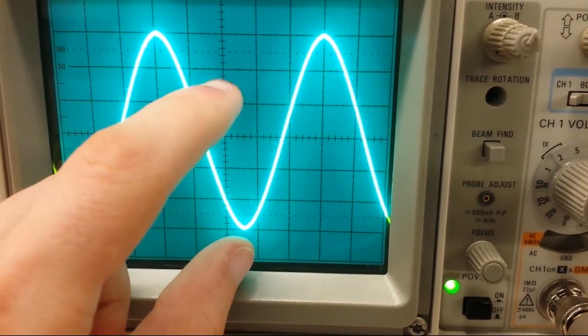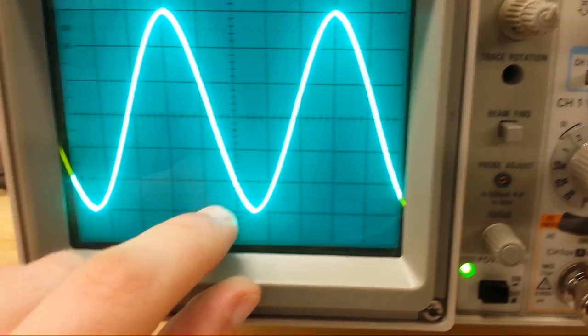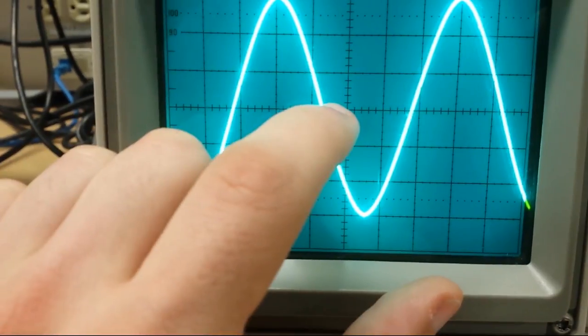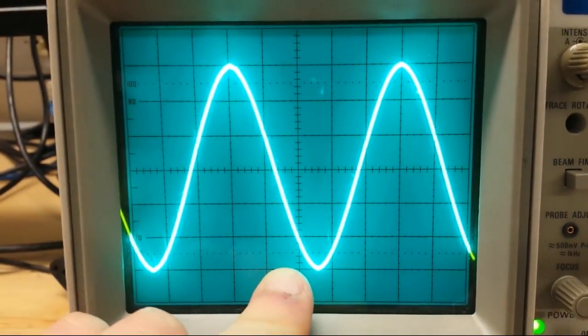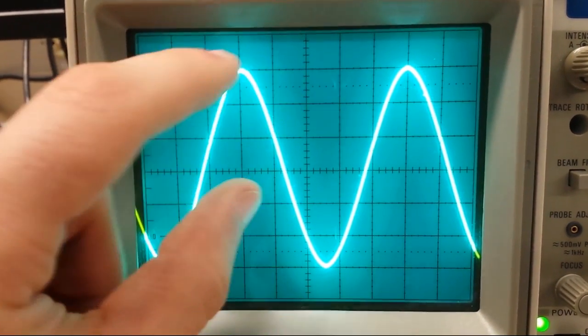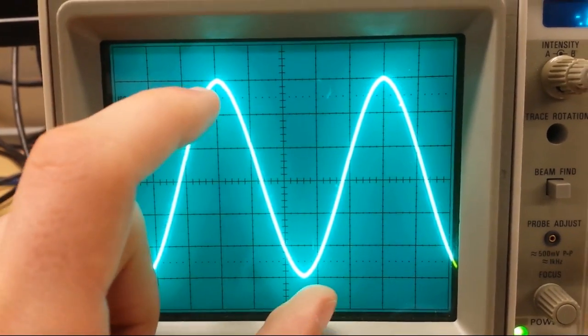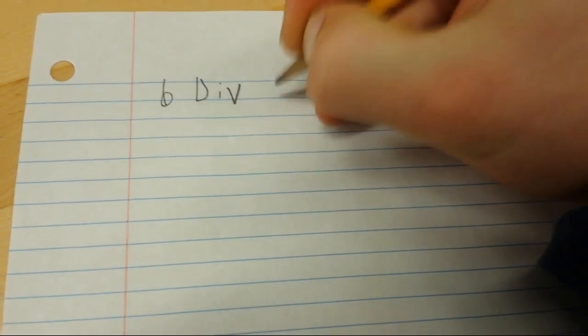So if we noticed, if you notice, it is one, two, three, four, five, six, I'm sorry, I'm counting that wrong. One, two, three, four, five, six. Yeah, there we go. Six divisions, or these little, like, square things from the top of the wave to the bottom of the wave. Again, peak to peak. So, come over to a blank piece of paper, and we have six, and we'll abbreviate it as D-I-V for division.